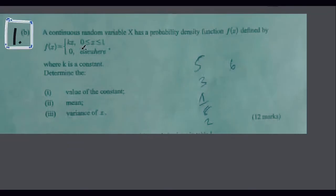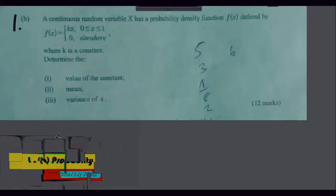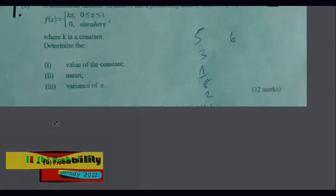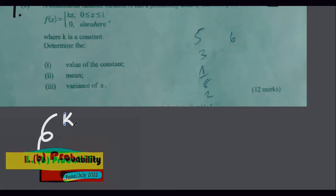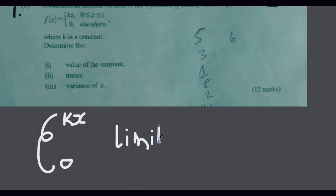So you may be asked to find the value of the constant which is k, the mean and the variance of x. So let's begin. First we will write the limits which is kx and 0. So the limits are 0 and 1.